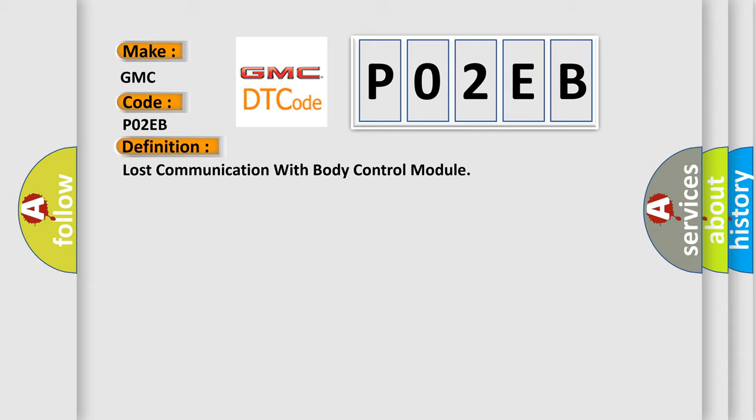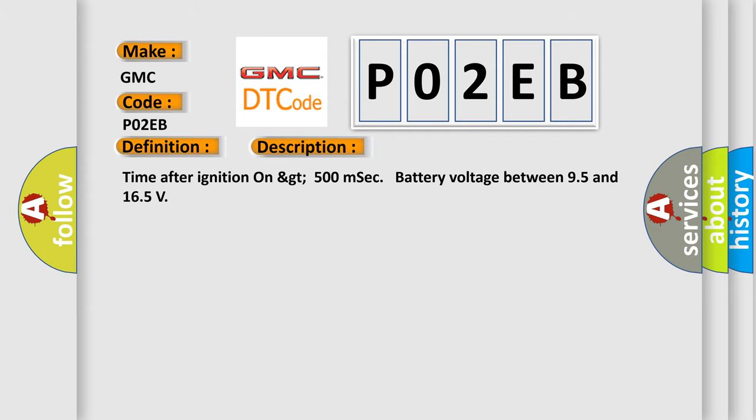And now this is a short description of this DTC code. Time after ignition on GT500 milliseconds, battery voltage between 9.5 and 16.5.